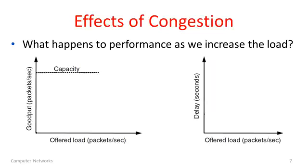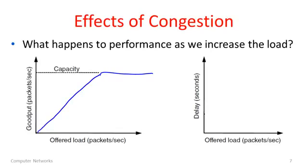Let's think about what happens when congestion occurs and its effect on performance. On the left-hand side we're looking at the effect on goodput as we increase the load on the network. Goodput is simply the amount of desired traffic that gets through — almost synonymous with throughput. Ideally, as offered load increases, goodput should rise exactly with it, until offered load reaches the capacity, at which point goodput can't go up any further. This is the ideal curve.